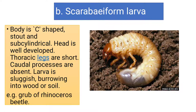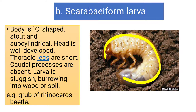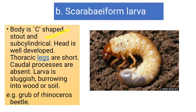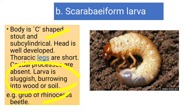The second type is the scarabaeiform larva. As the name suggests, it is a C-shaped larva — broad, stout, and sub-cylindrical in shape. Thoracic legs are present but short compared to campodeiform. These larvae are sluggish and burrowing, found in soil or wood. The grubs of rhinoceros beetles are scarabaeiform type. It is identified as a C-shaped fleshy larva.